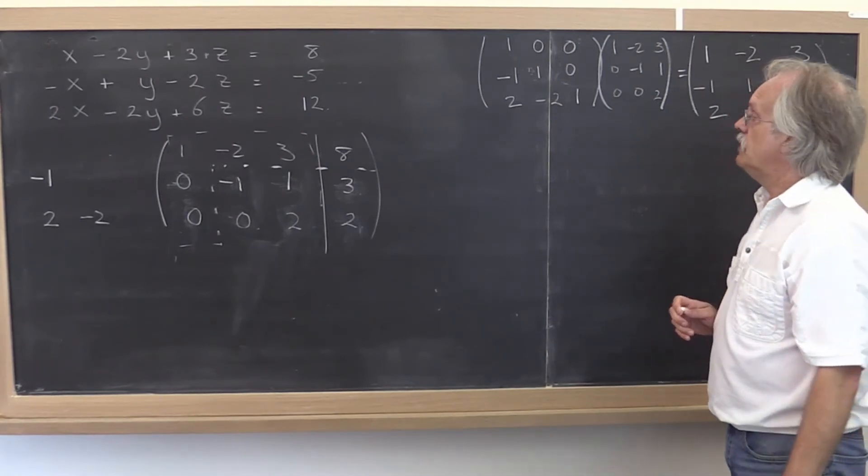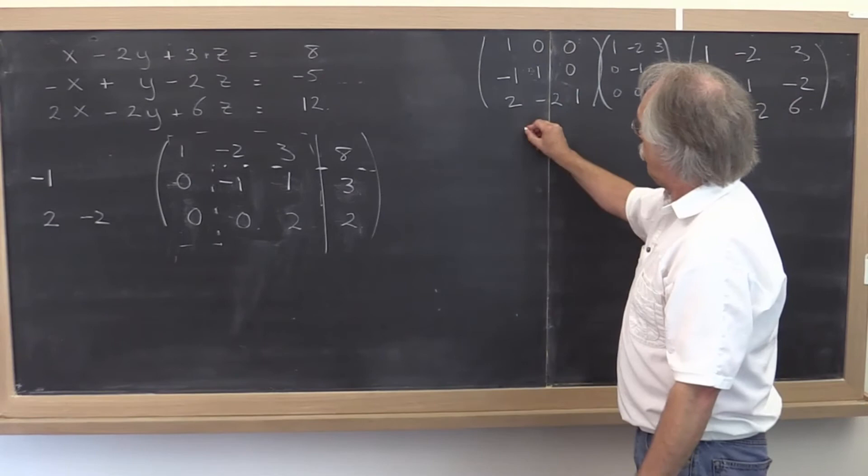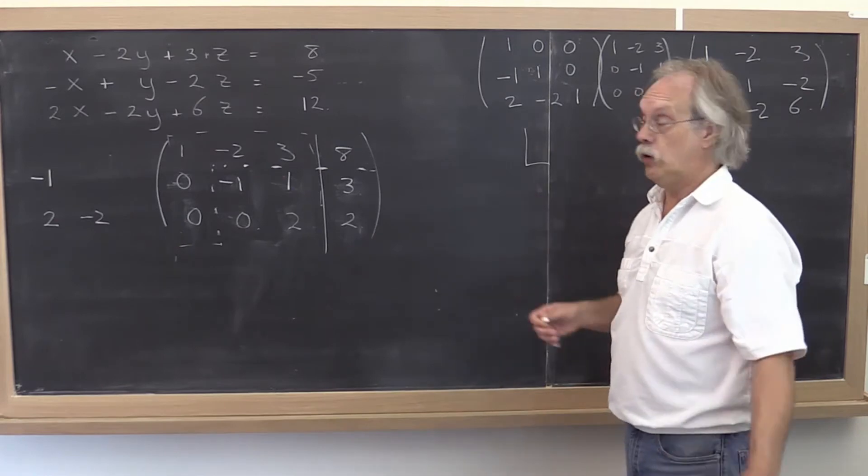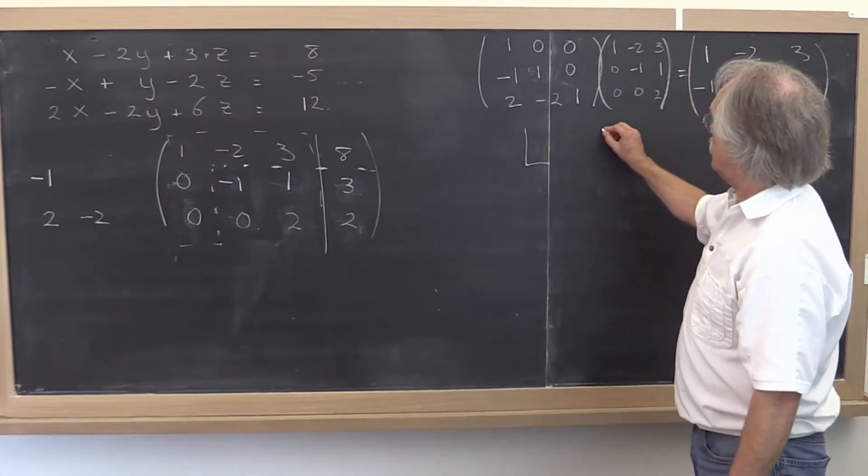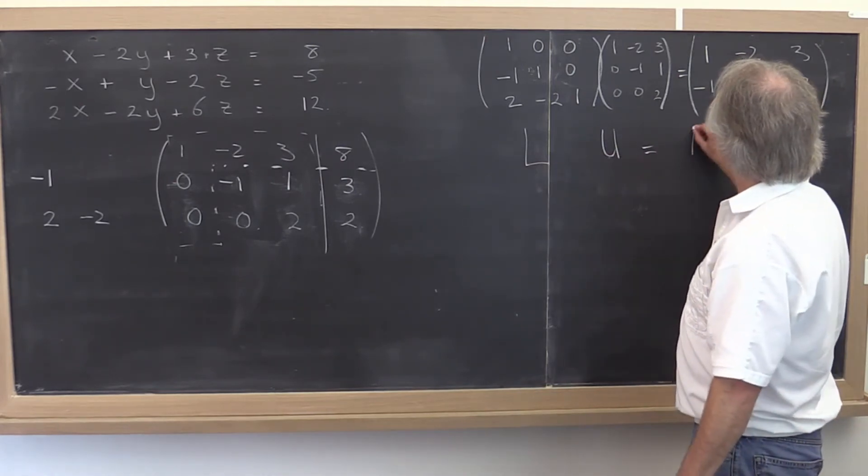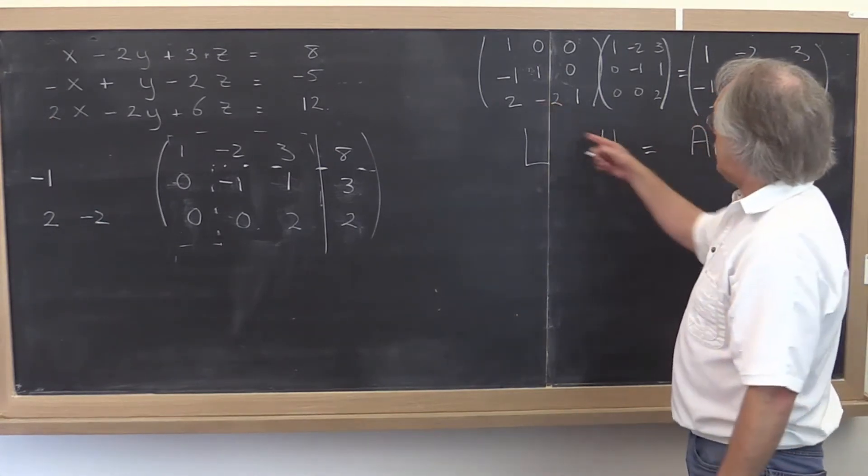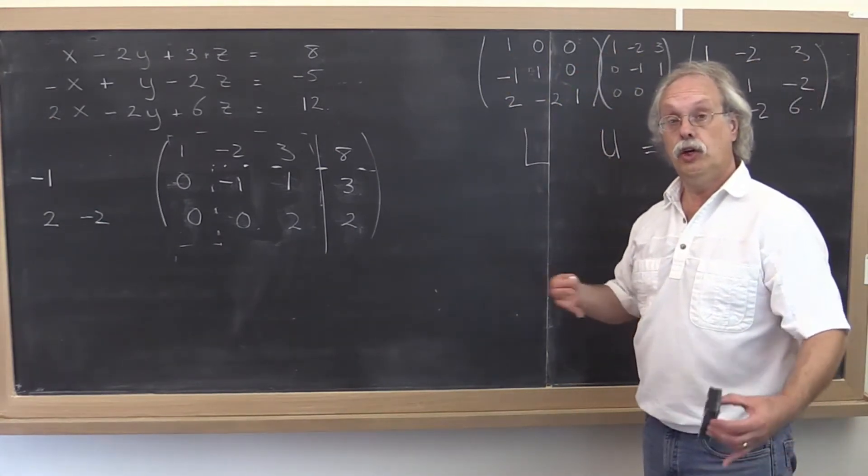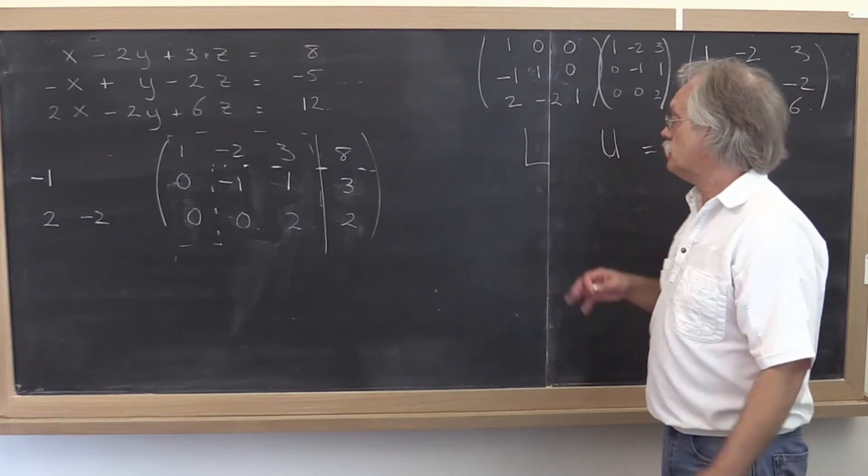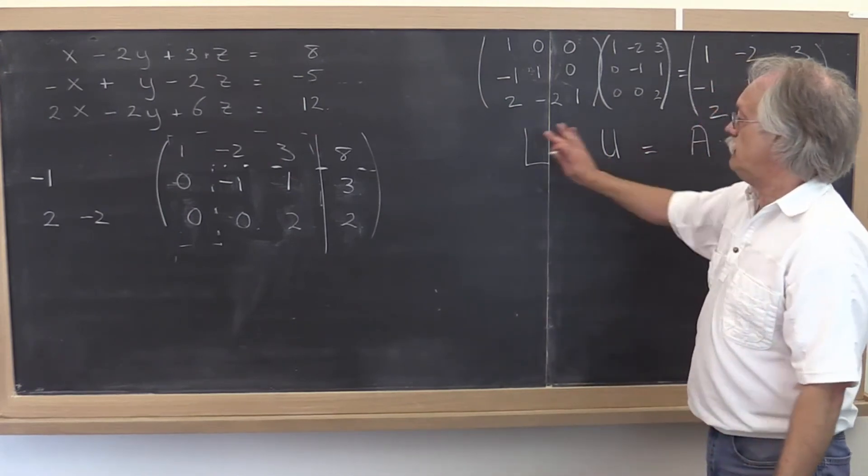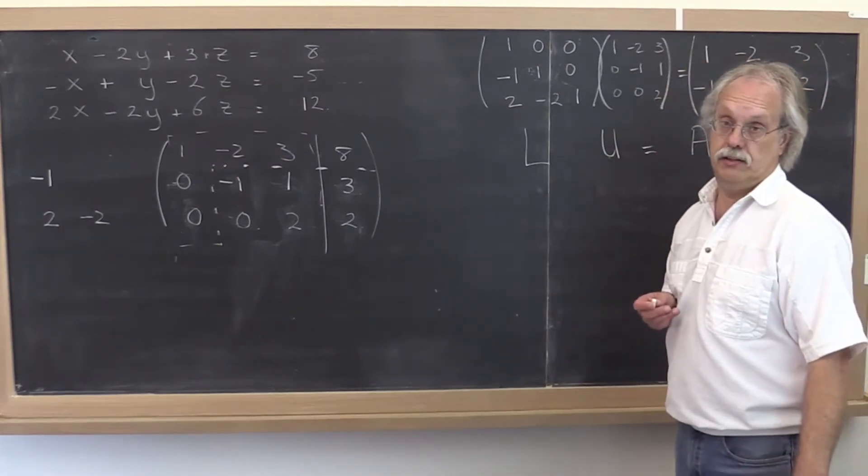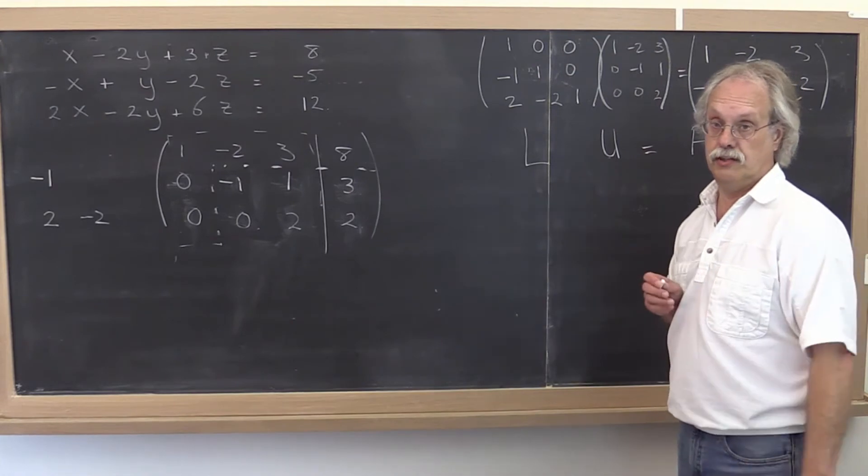So this we can refer to as a unit lower triangular matrix. It's got 1s on the diagonal and that's what we call a unit lower triangular matrix. This we can refer to as an upper triangular matrix. And what we're saying is if you compute L times U, you get back A. And this then is known as the LU factorization of matrix A. And it turns out that you can compute the LU factorization of matrix A and then you can do other things with that. For example, you can use it to solve linear systems, etc.